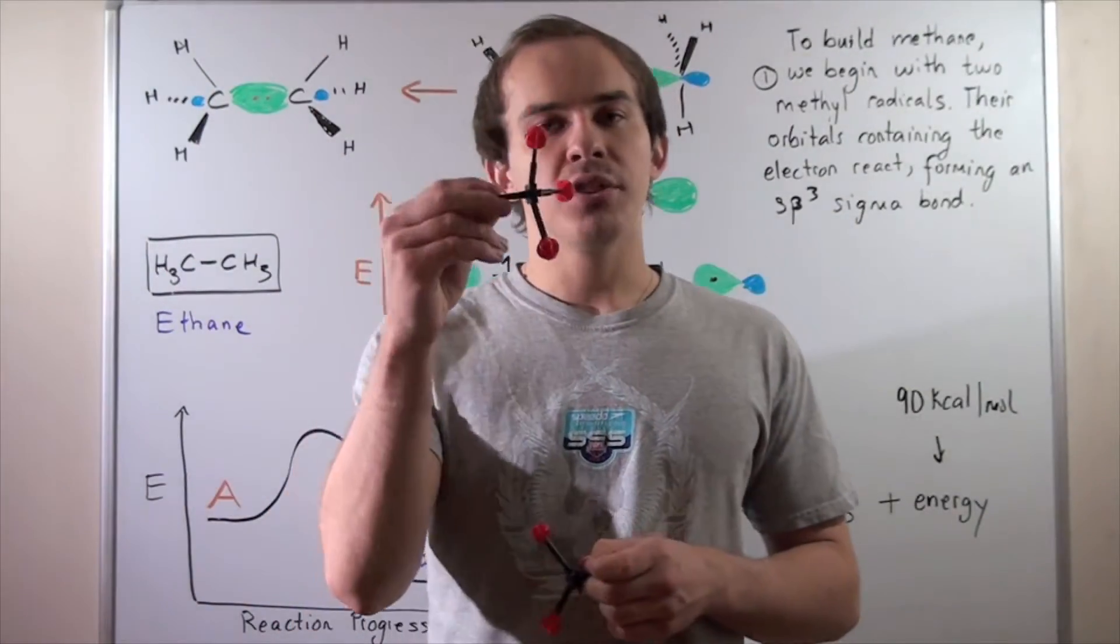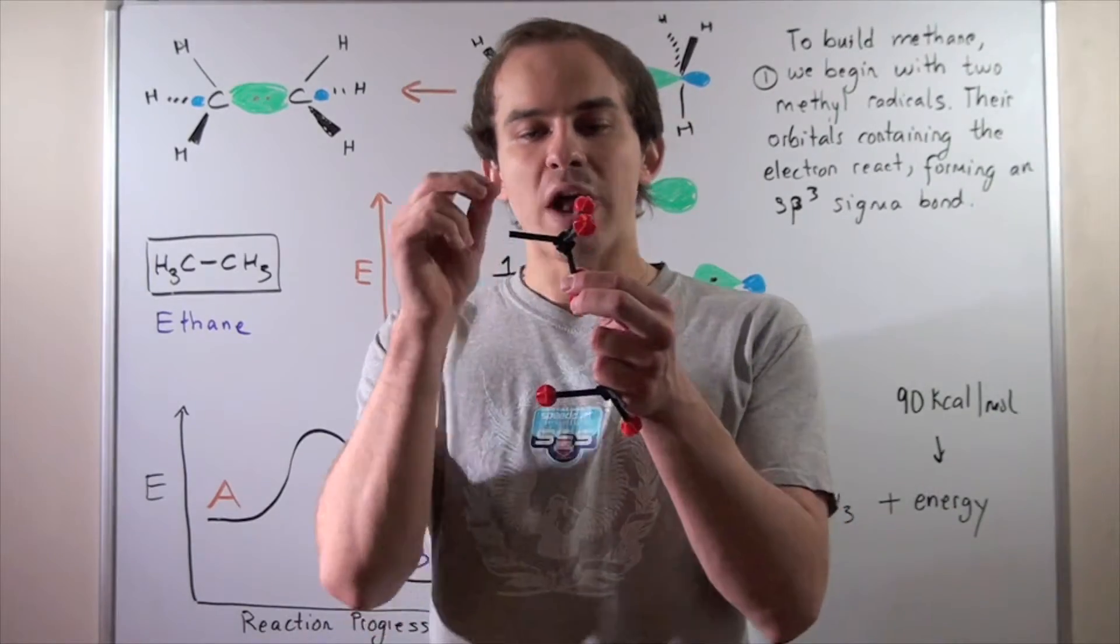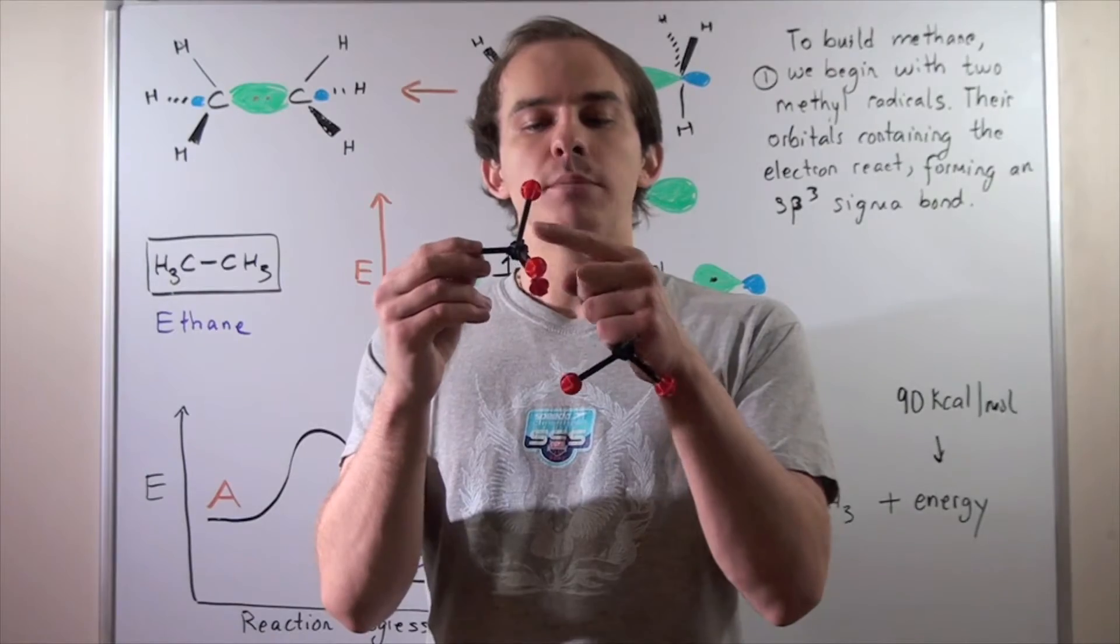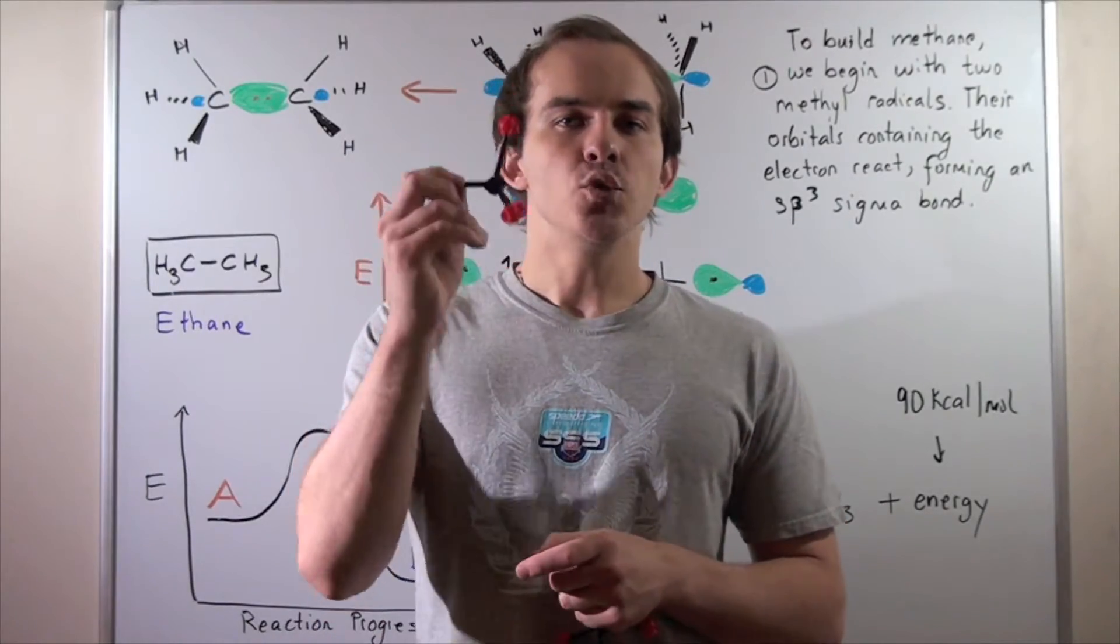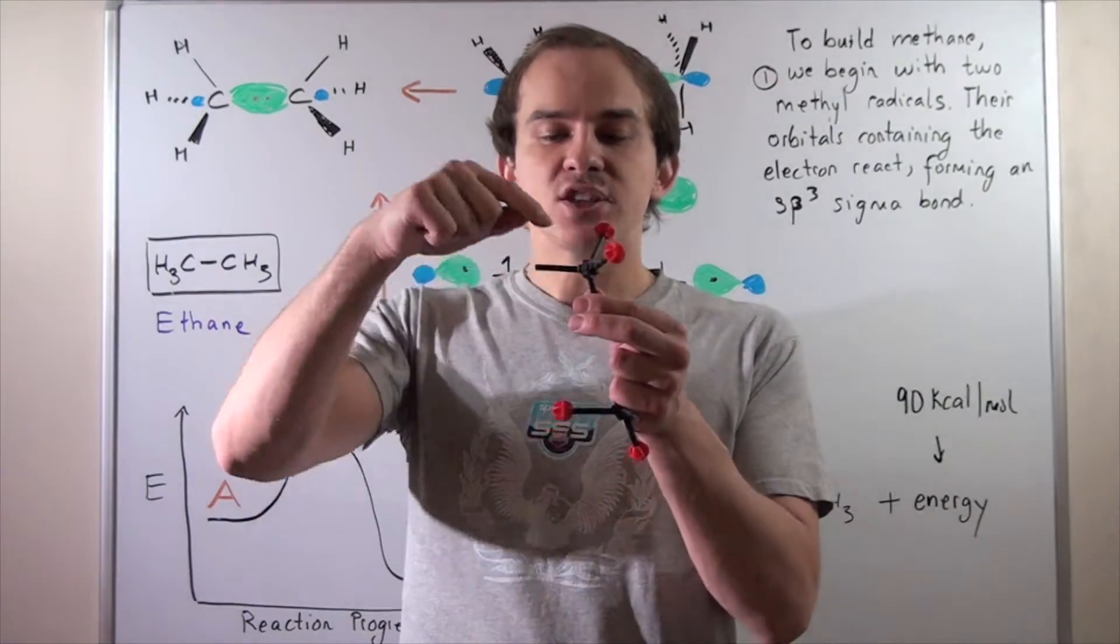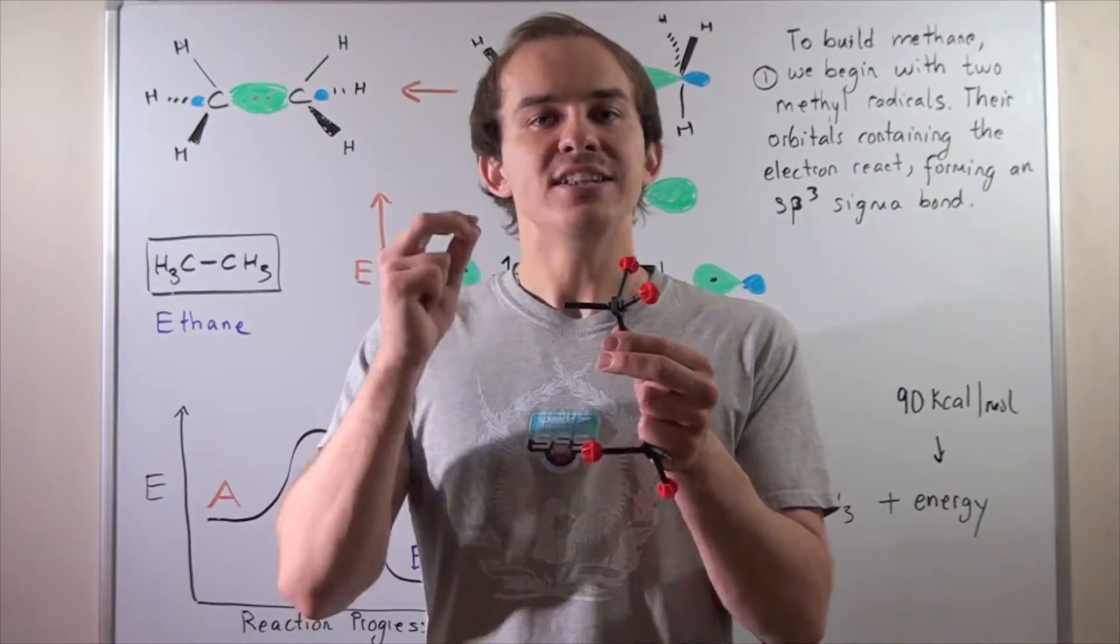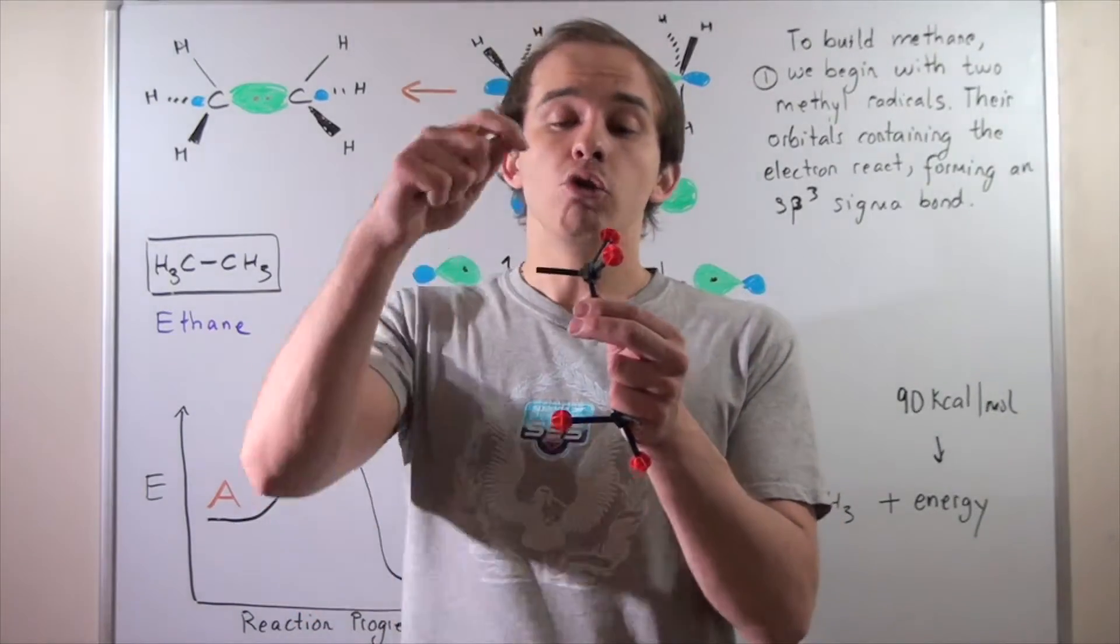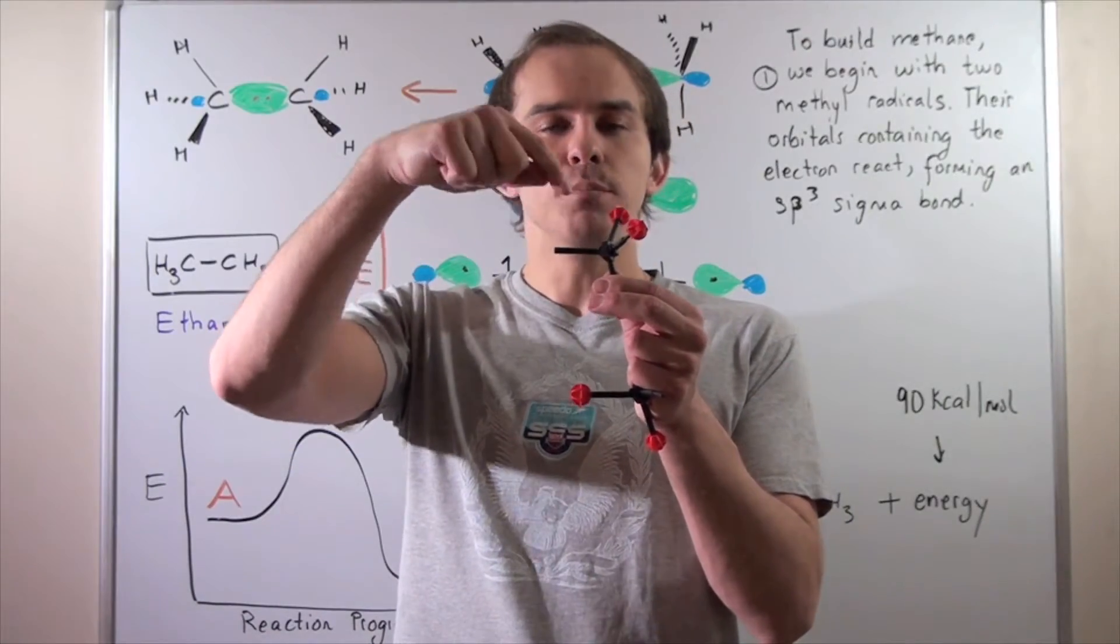So now we have a methyl radical. In this radical, these bonds between the carbon and the H are approximately sp2 hybridized. And this orbital is approximately a 2p orbital. And our electron, the single electron, will be found within this 2p orbital.